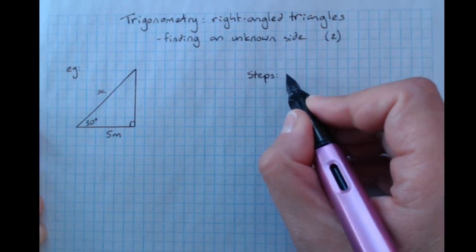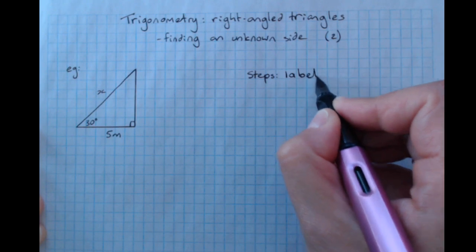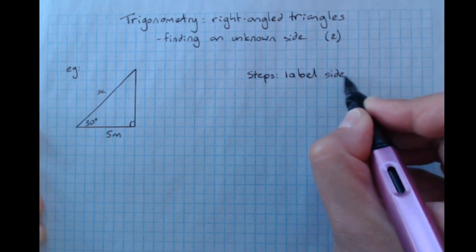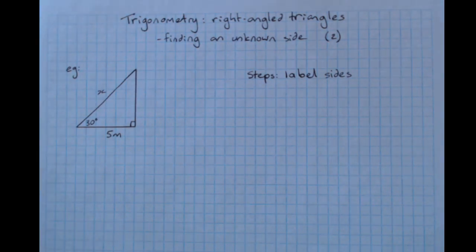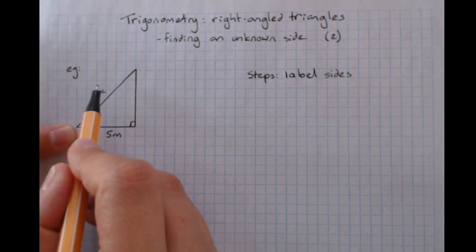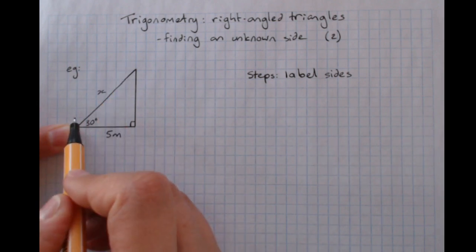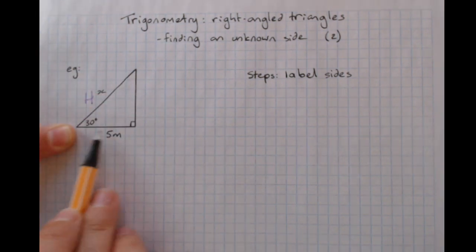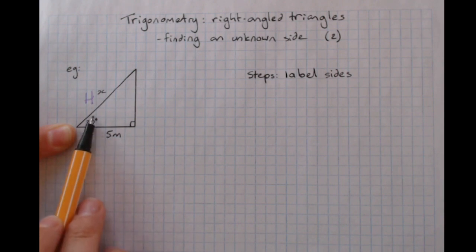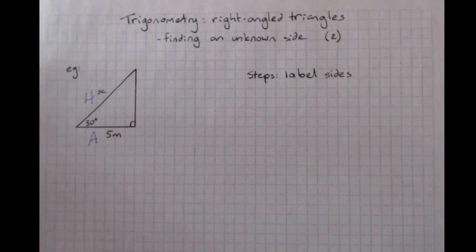So our steps were label the sides that have a number or a letter on them. So here's my angle, this side has a letter, it's the longest side opposite the right angle, it's the hypotenuse. This side has a number, it's next to the angle, it's the adjacent.